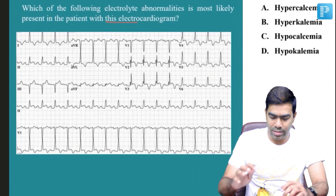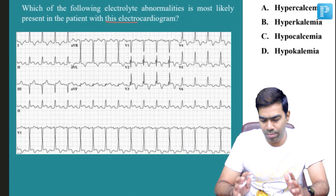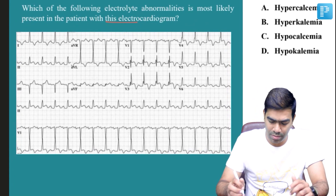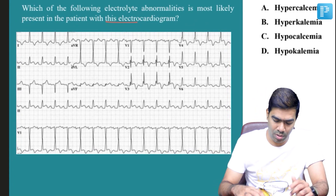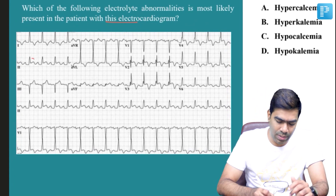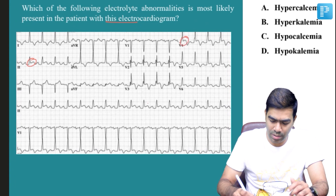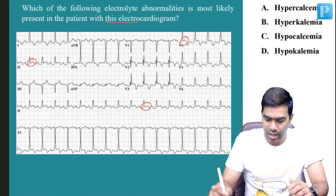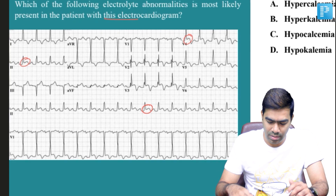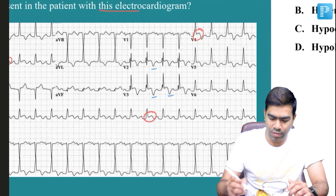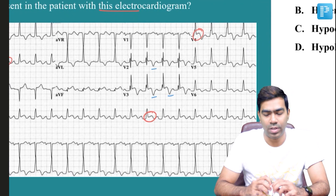First, look at this EKG. There are two or three prominent findings that you can make out. The first one is the obvious ST segment elevations, as you can see here. And the second one is your T wave changes, which we are looking at here.